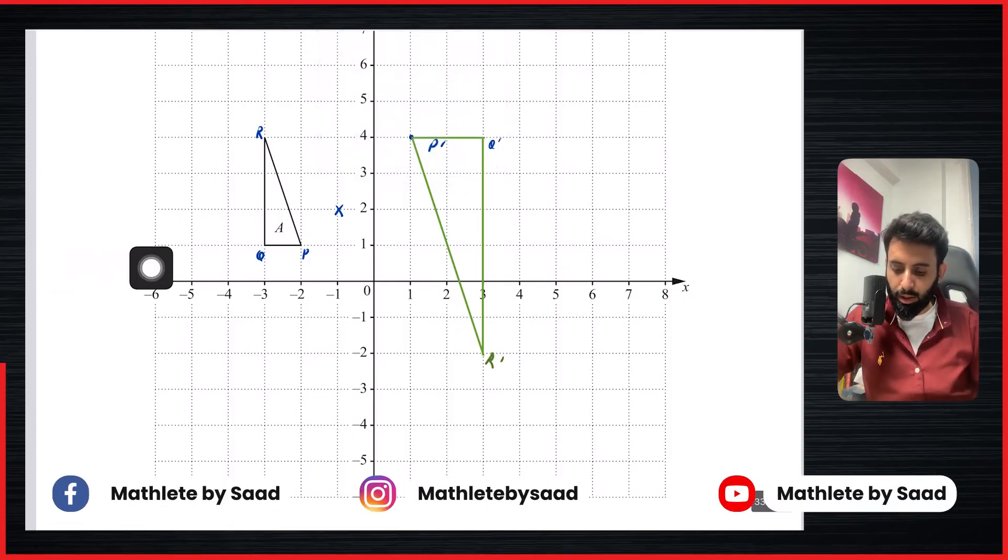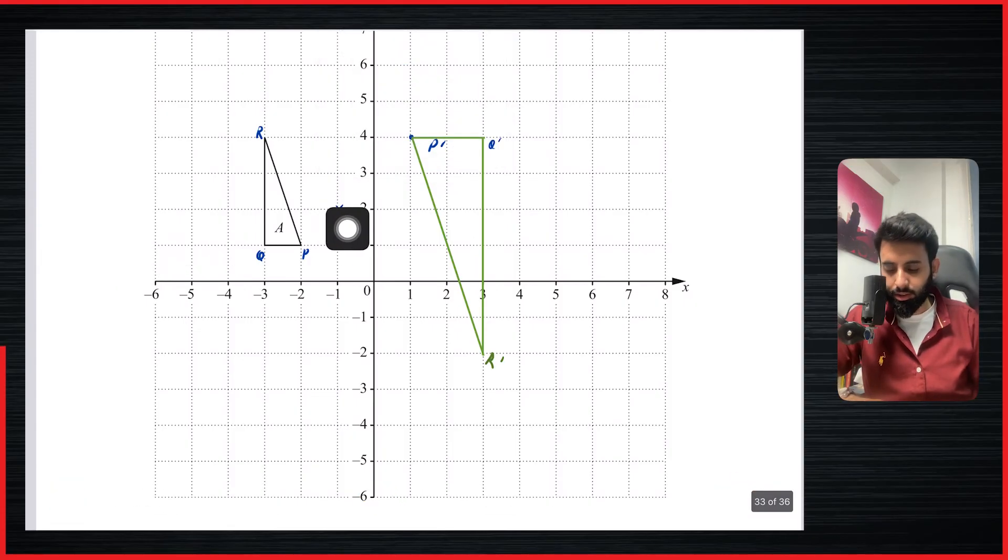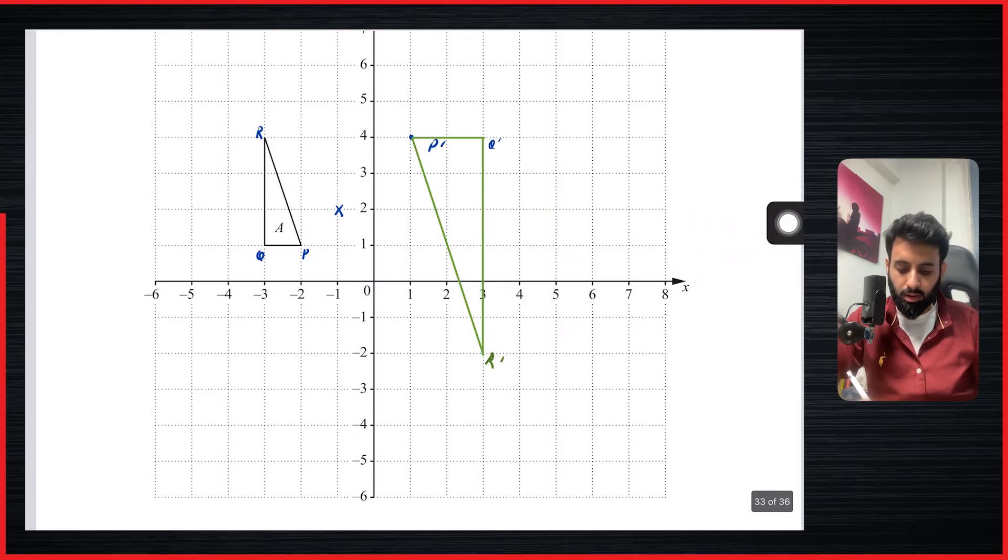So here we have. Now what I will recommend is that you still check your answer using the conventional method. So R from the center is two left and two up, you double that, but in the opposite direction. So 1, 2, 3, 4, I should hopefully land on R. Let's see if that's the case. One, two, three, four. Yep, that's it. That means it's the correct answer.